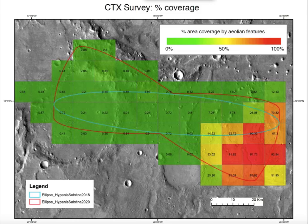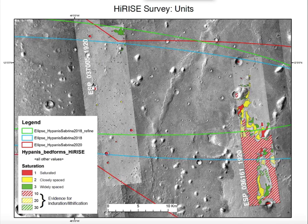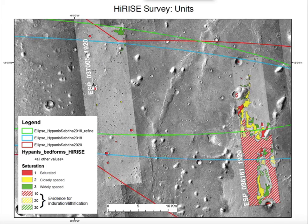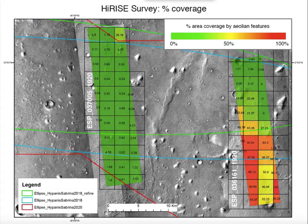You can quantify aeolian coverage on the grid and end up with an aerial fraction coverage by aeolian features. When using CTX, it was relatively simple because every grid cell had complete image coverage, giving just a percentage of polygon coverage. A slightly trickier case was using HiRISE images, because the HiRISE footprint doesn't cover the entire mapping area, so you have to multiply results by the fraction of each grid cell that the footprint occupies. But you end up with a similar result, resolving smaller features than CTX resolution allows.